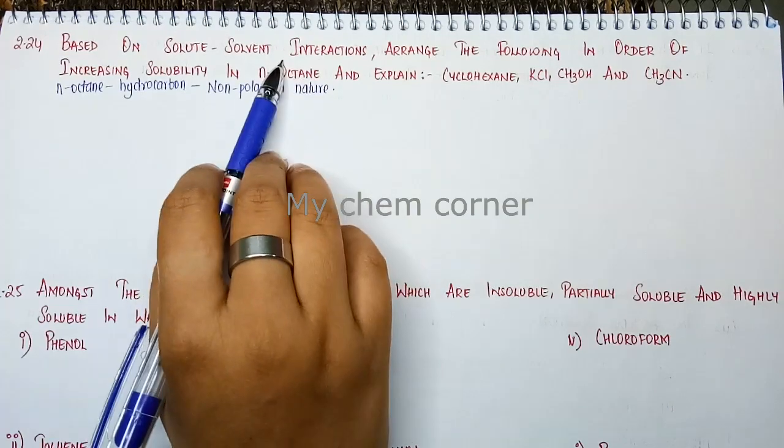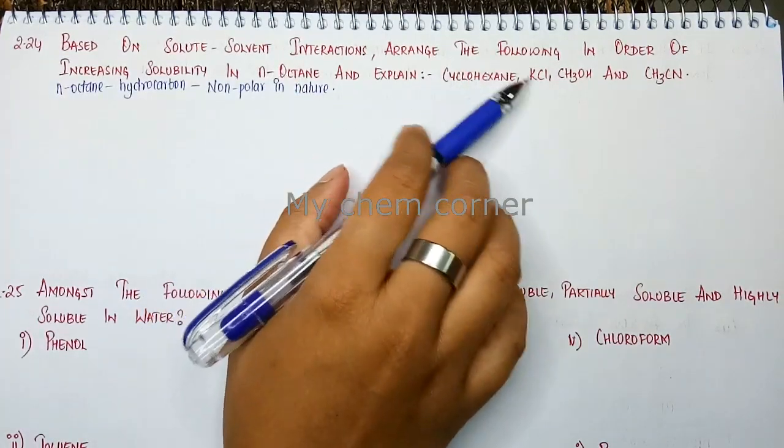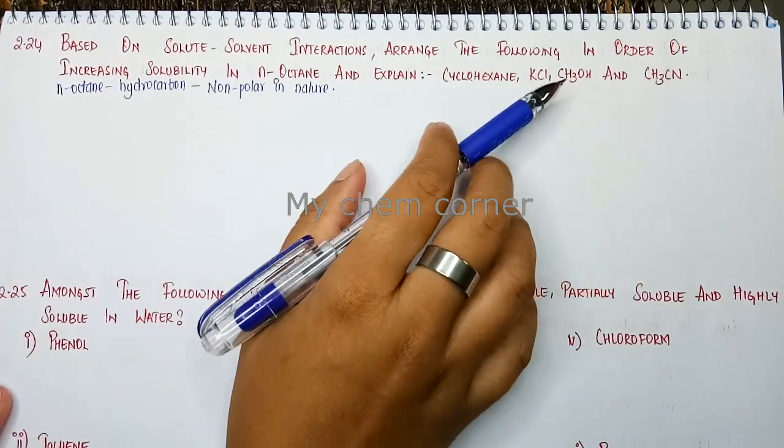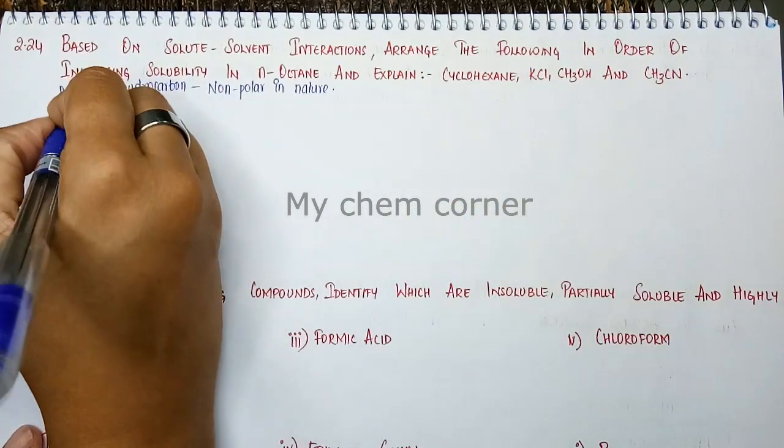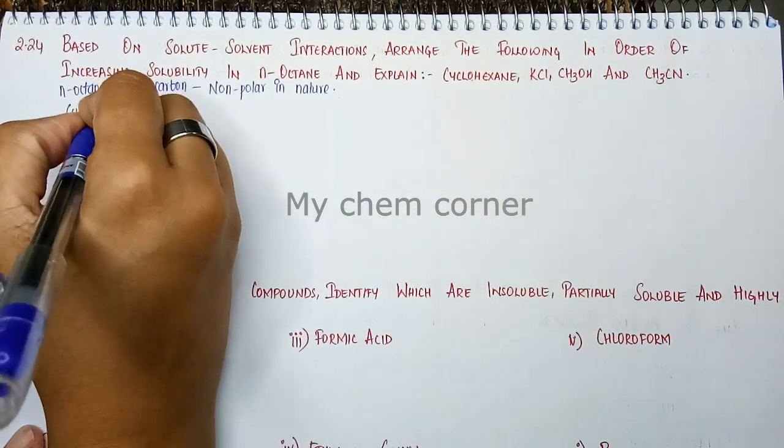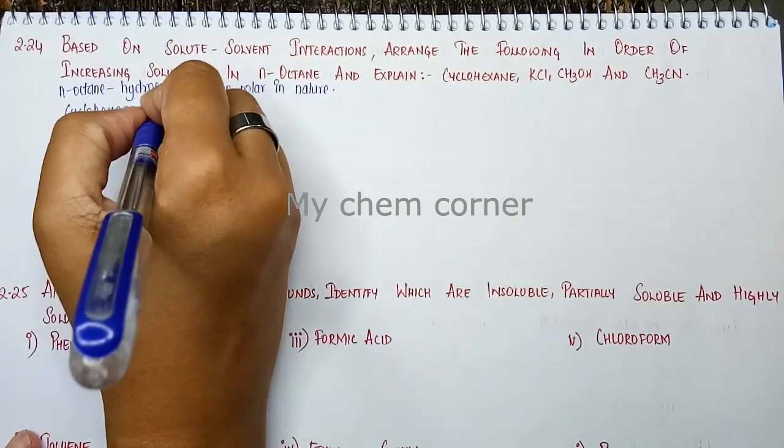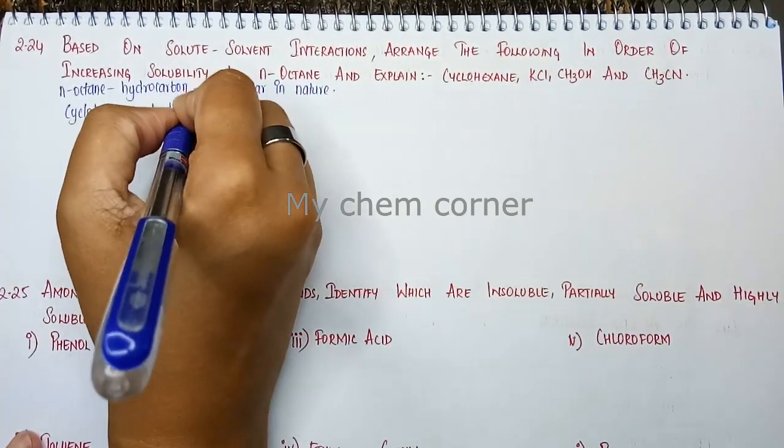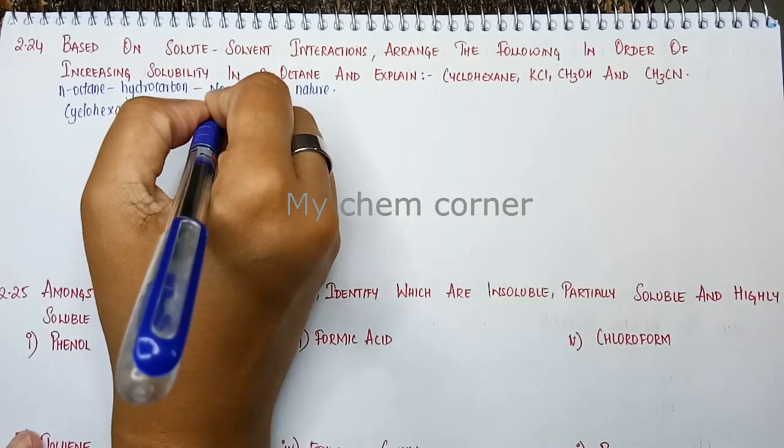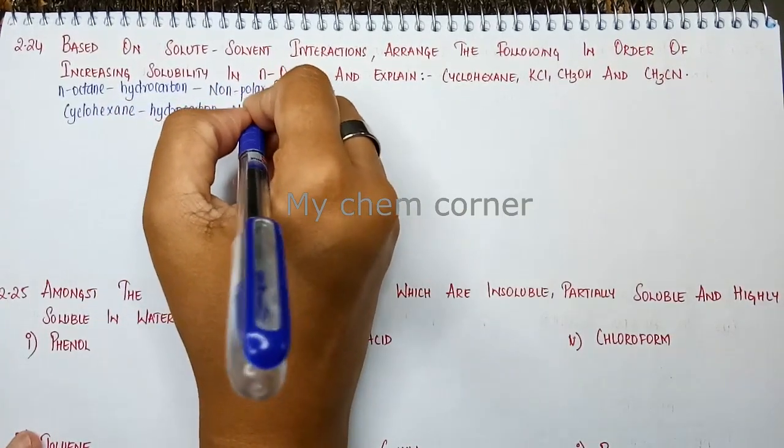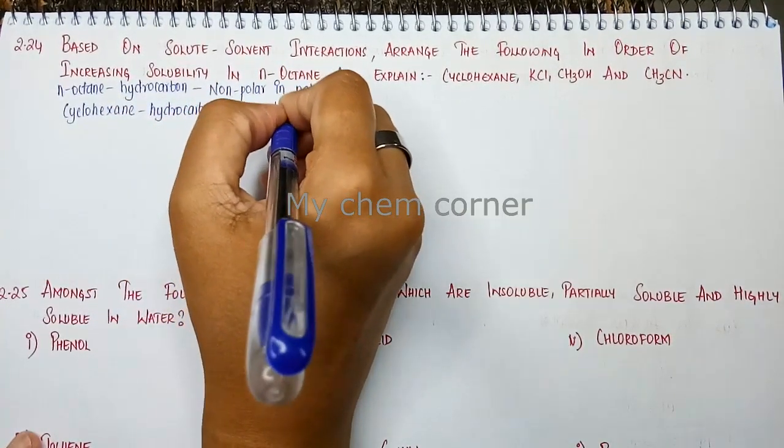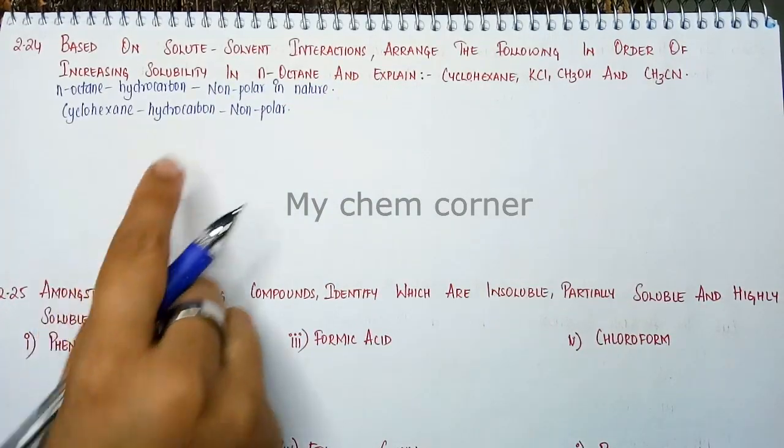Now that you know the nature of n-octane, let's see what is the nature of each compound. Cyclohexene, with its cyclic hexane ring, is a hydrocarbon and is non-polar.